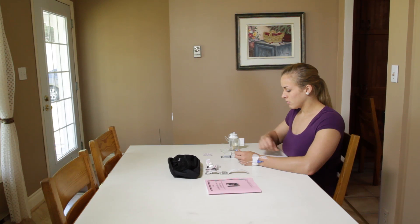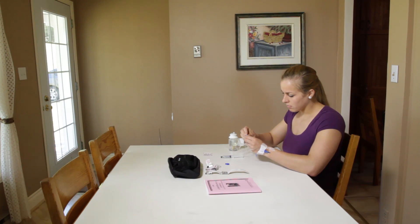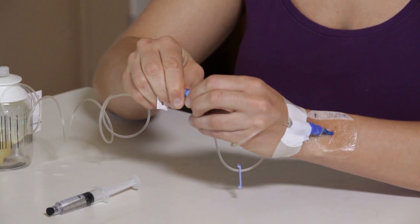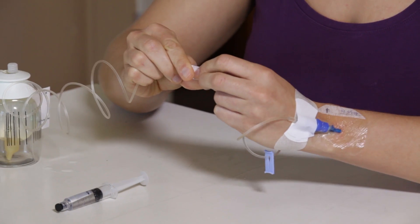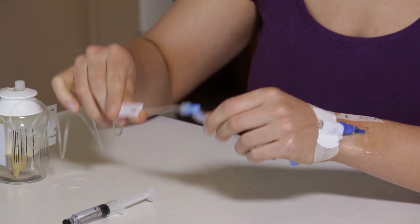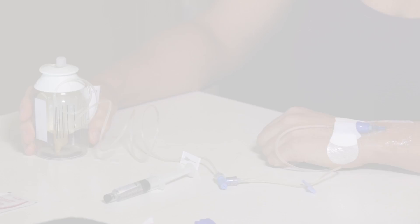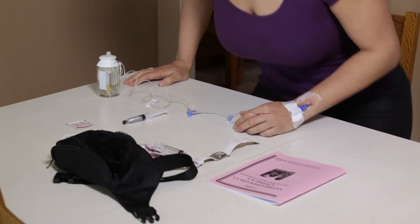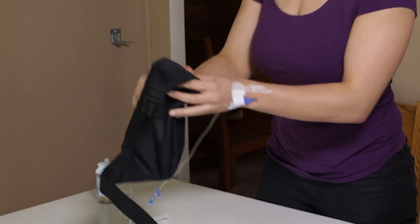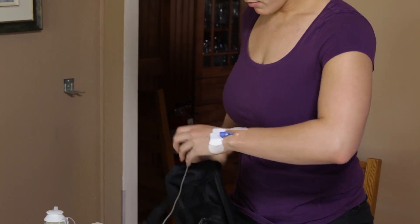Holding the catheter's extension tube, remove the protective cap on the infuser. Screw the infuser tubing into the extension tubing from the catheter without touching the ends. Open the tube clamp on the infuser so the antibiotics can flow. Place the infuser in your belt bag to protect it.